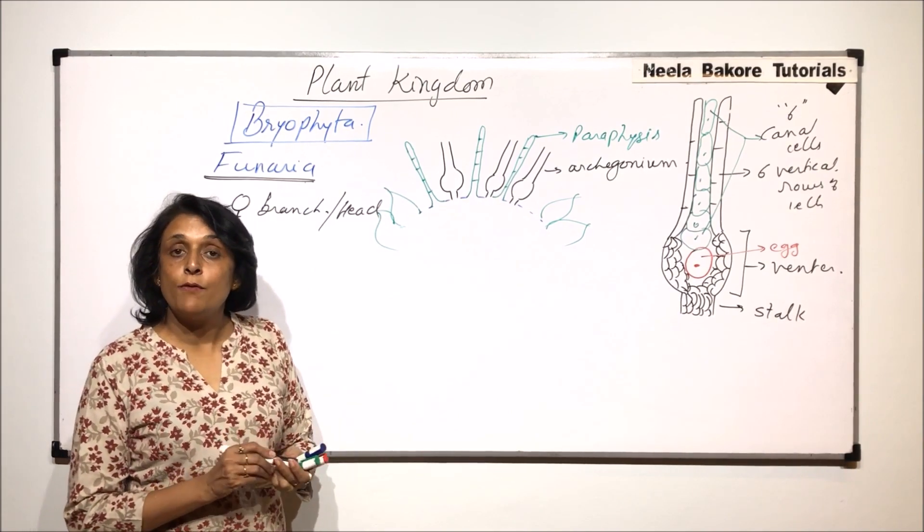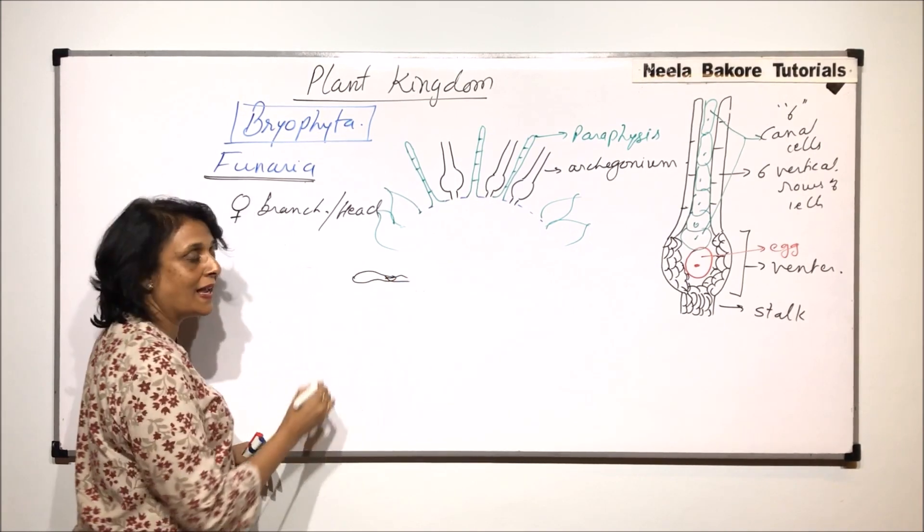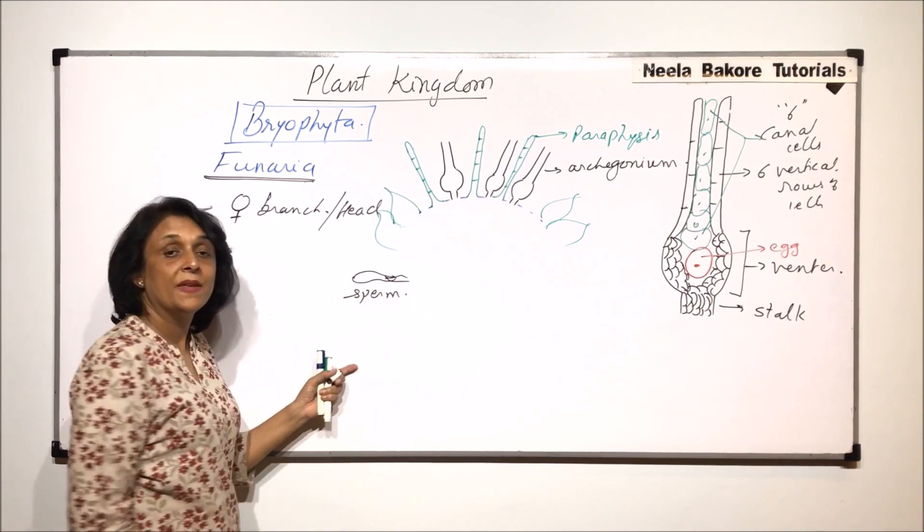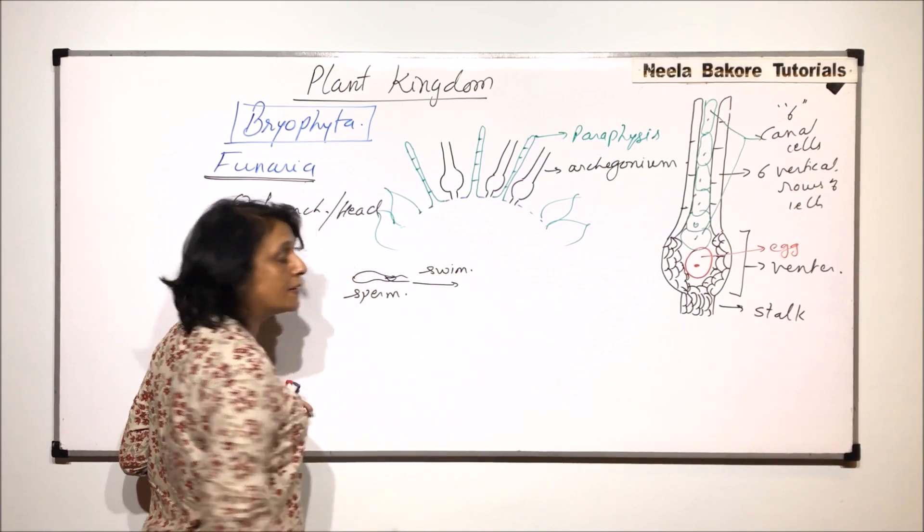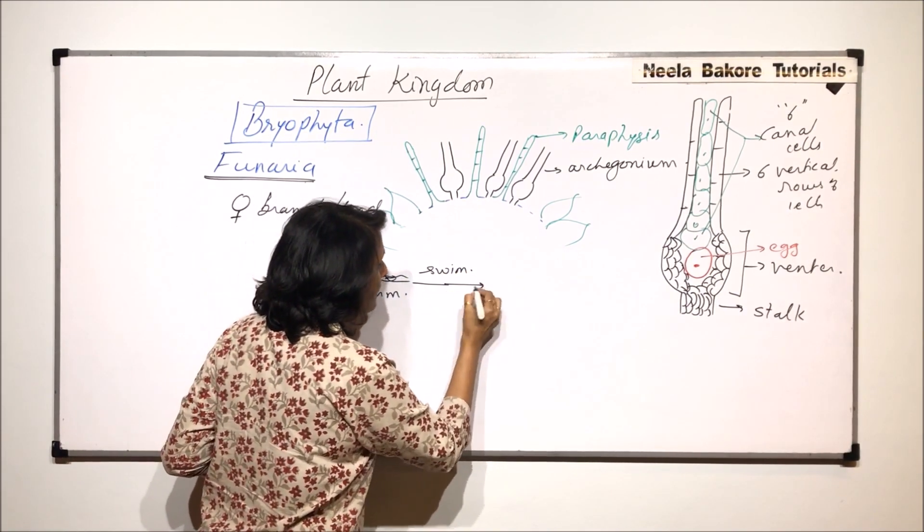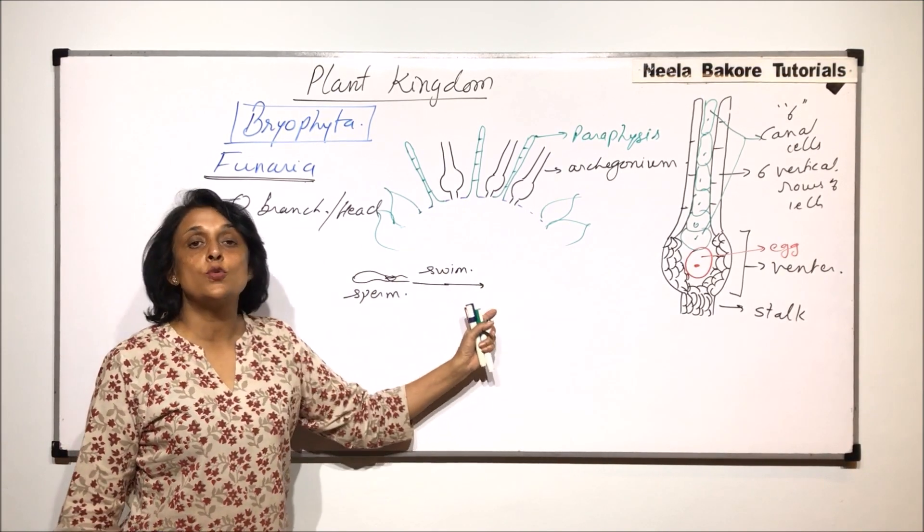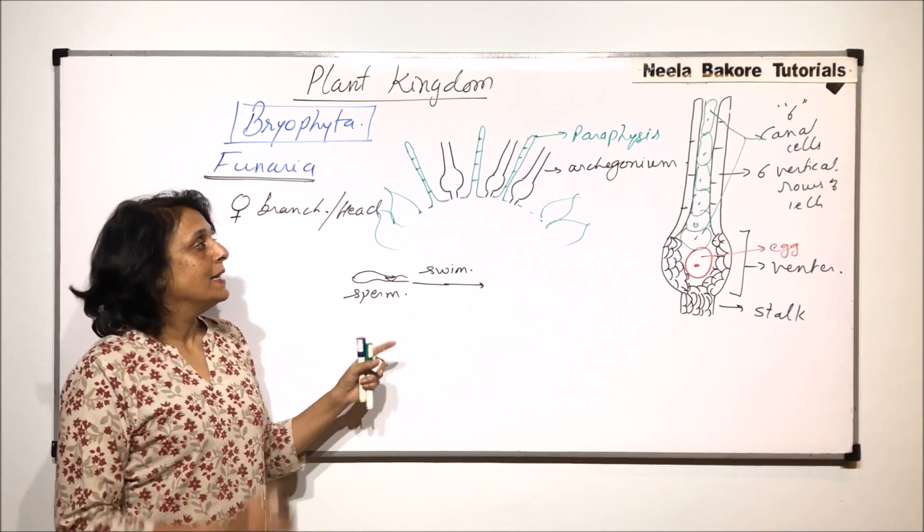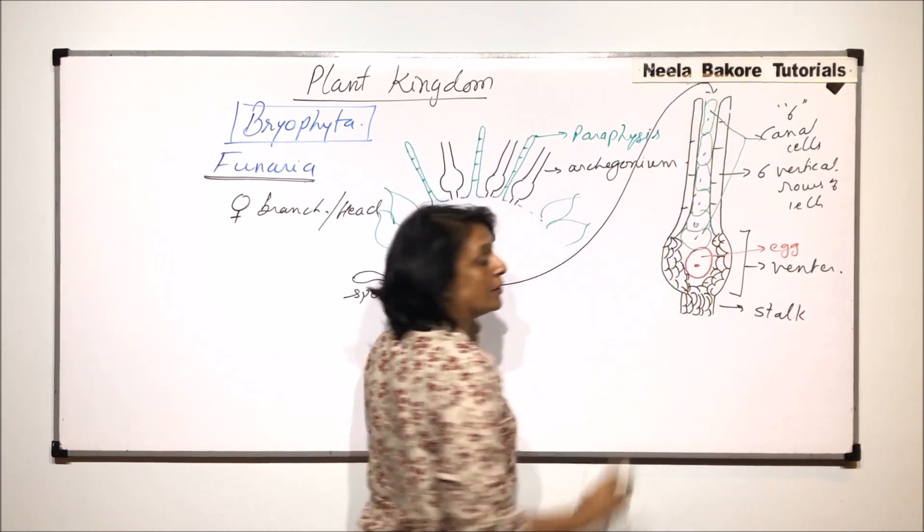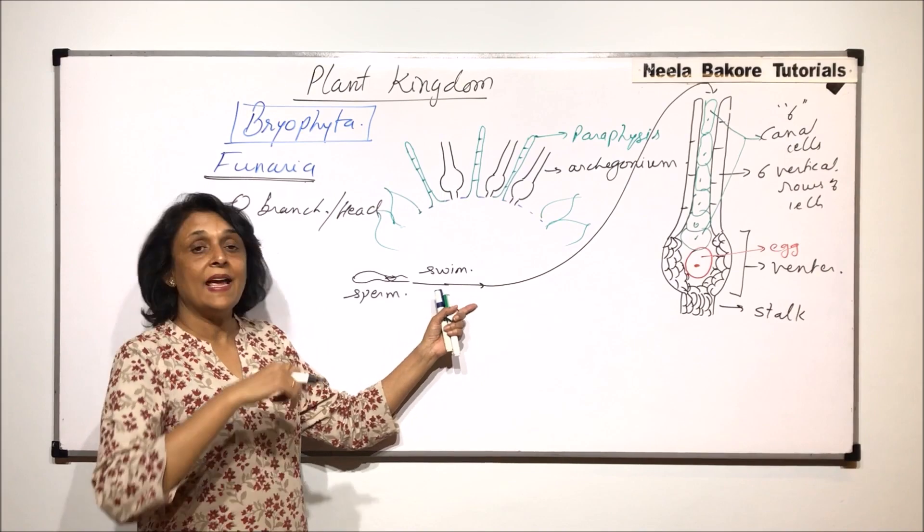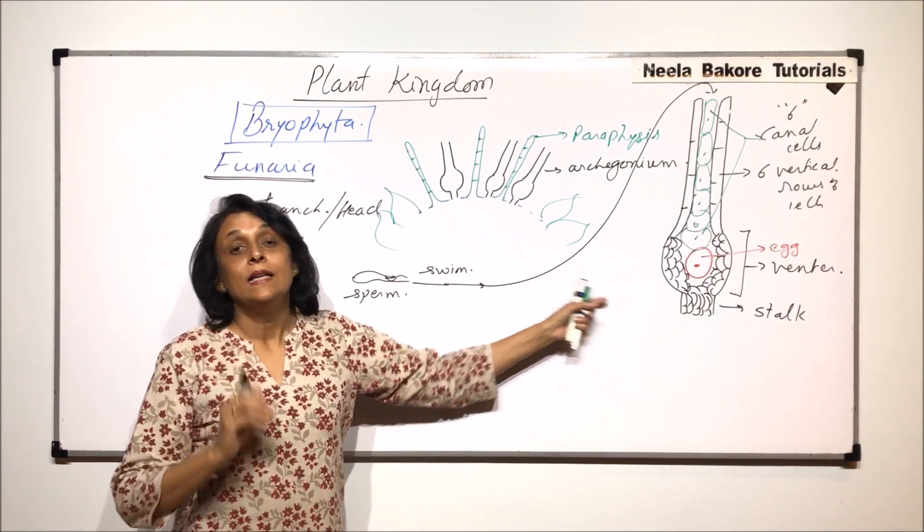We have seen the formation of the male gamete also. So if this is the male gamete which is biflagellate, we normally call it the sperm. So the sperm is going to swim and for this only water is required. That means Funaria requires a thin layer of water so that these sperms can swim up to the end. Now when the sperms swim, what exactly is going to happen? These sperms have to enter from here. Now how would the sperms know that they have to reach that particular site or that particular area?